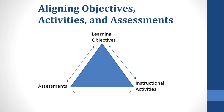Aligning objectives, activities, and assessments: your choice of assessments should be guided by your learning objectives for the course. Activities and instruction should be designed to provide students with the necessary means of learning and practicing the knowledge and skills that you will be assessing. This is sometimes called the Assessment Triangle. When all three elements are aligned, it ensures that your course is working as intended.